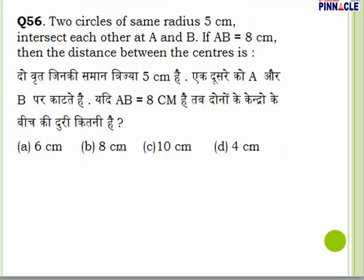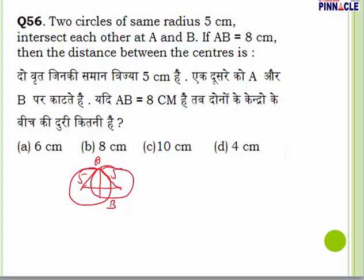Question number 56: two circles of the same radius 5 cm intersect each other at A and B. If AB = 8 cm, find the distance between the two centers. AB is bisected by the line joining the centers, so the half-chord = 4 cm. With radius = 5 and half-chord = 4, by Pythagoras (3-4-5 triplet), the distance from center to chord = 3. Total distance between centers = 3+3 = 6 cm.